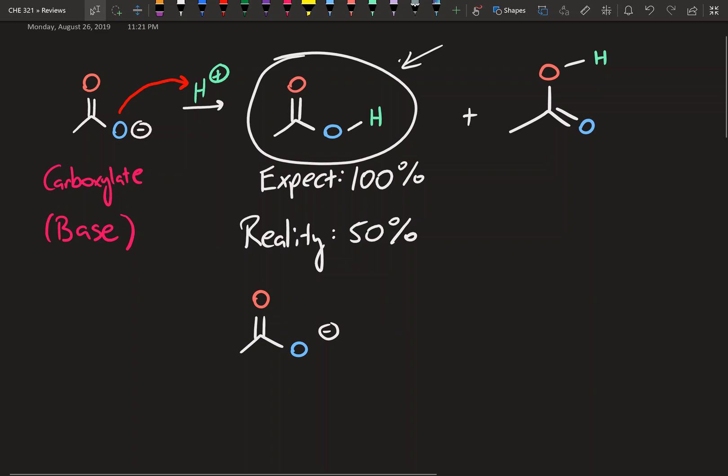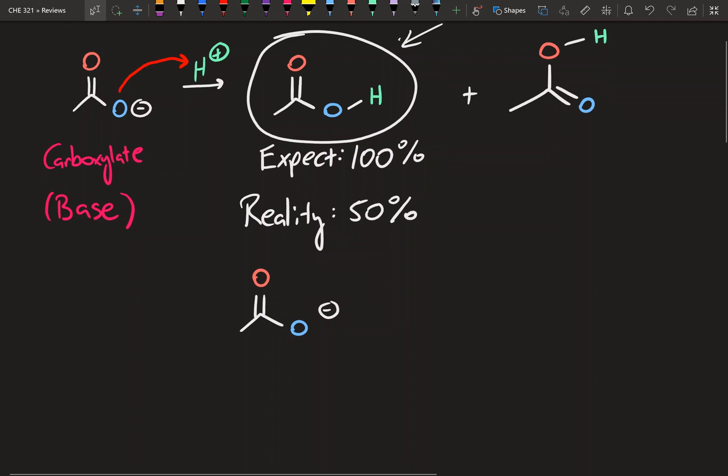So resonance, it can explain why we get this product also 50% of the time when we expected it to never happen. All right, so resonance allows us to show the flow of electrons within a structure. And curved arrows are going to come into play again. So now I'm going to draw the lone pairs just so it's a little clearer.